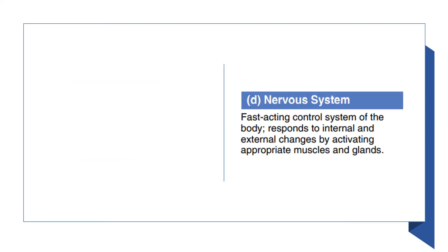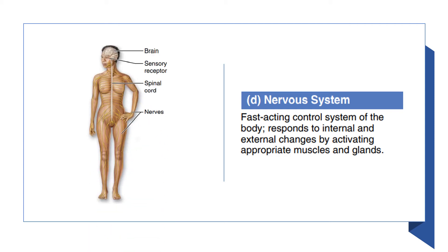Another system is the nervous system. The body responds to internal and external changes by activating appropriate muscles and glands. It consists of the brain and spinal cord, sensory receptors, and nerves. Sensory receptors detect changes in temperature, pressure, or light and send messages to the central nervous system — the brain and spinal cord — so it is constantly informed about the environment. The central nervous system then assesses this information and responds by activating appropriate body effectors, such as muscles or glands, which are organs that produce secretions.